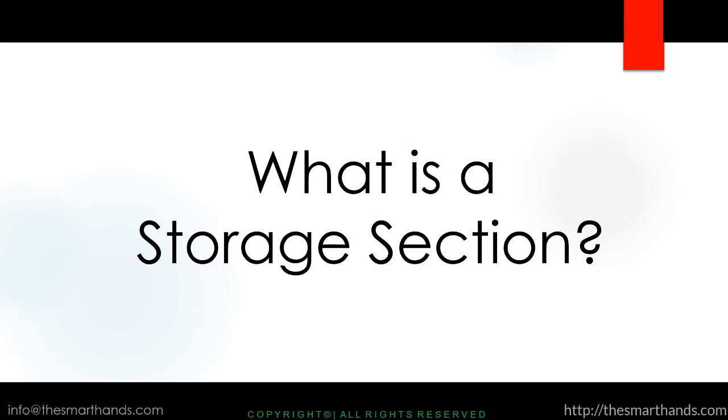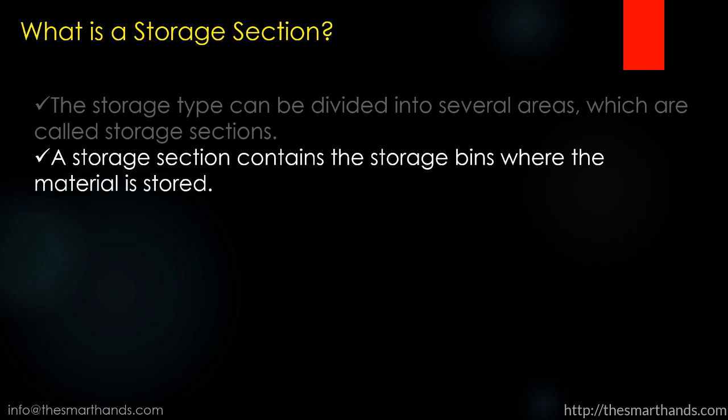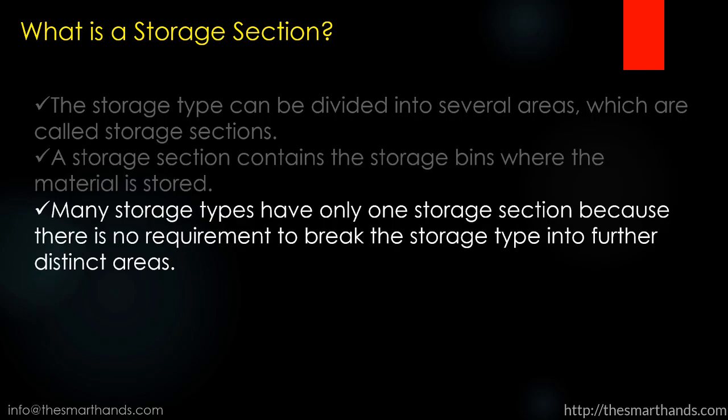Before we start, let us understand what a storage section is. The storage type can be divided into several areas which are called storage sections. So basically, when you have a storage type and you want to divide it further — like different racks within a storage type — those are called storage sections. In WM language, a storage section contains the storage bins where the material is stored. Many storage types have only one storage section because there is no requirement to break the storage type into further distinct areas.